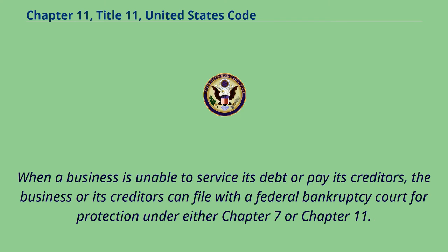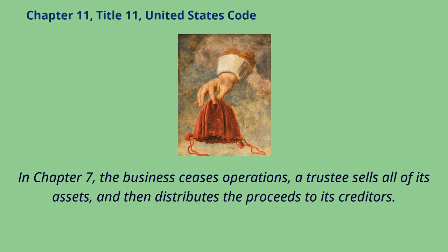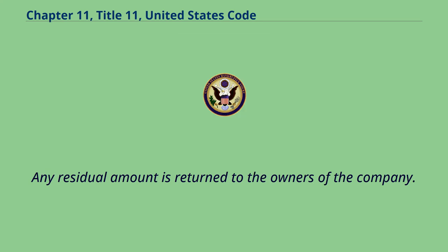When a business is unable to service its debt or pay its creditors, the business or its creditors can file with a federal bankruptcy court for protection under either Chapter 7 or Chapter 11. In Chapter 7, the business ceases operations, a trustee sells all of its assets, and then distributes the proceeds to its creditors. Any residual amount is returned to the owners of the company.